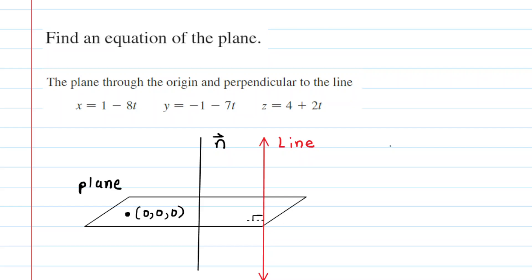We have to find the equation of a plane given this information, and we've tried to draw a representation of the plane. Notice that it says the plane passes through the origin, so that simply means it contains the point (0, 0, 0). We are also told that it is perpendicular to a given line, so we've drawn that line and tried to show that they are perpendicular to each other.